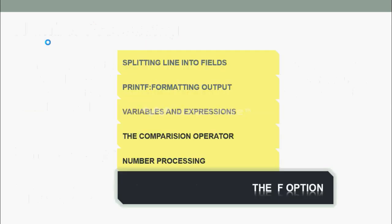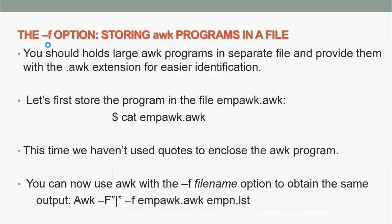Next, we are going to see the -F option. You should hold large AWK programs in separate files and provide them with a .awk extension for easier identification. Let's store the program in the file emp-awk.awk. As you can see here, cat emp-awk.awk. This time we haven't used quotes to enclose the AWK program. We can use AWK with the -f filename option to obtain the same output.